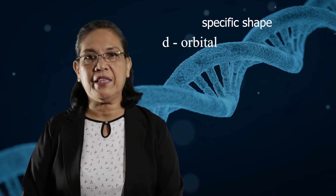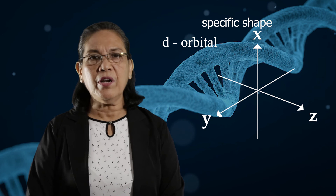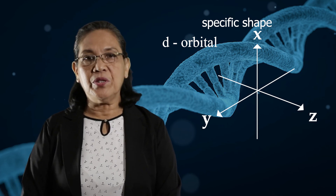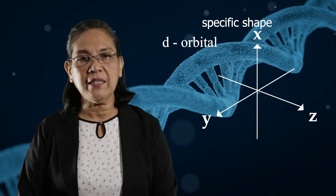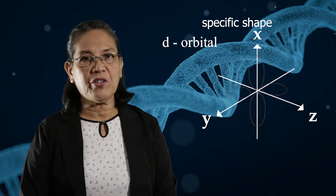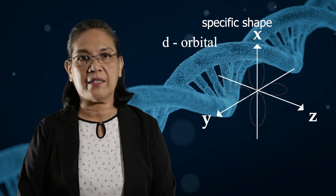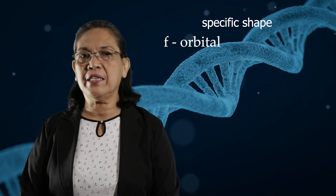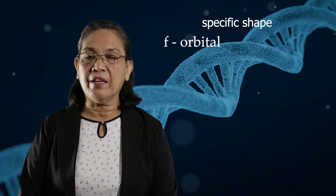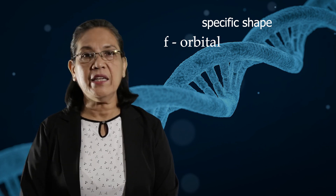For the d orbital, the shape is described as a 4-lobed electron cloud, with 2 major lobes and 2 minor lobes. The 2 major lobes may be located along the x-axis and 2 minor lobes along the y-axis, or 2 major lobes along the y-axis and 2 minor lobes along the z-axis. For the f orbital, the shape is complex — there are those having 6 lobes (3 major and 3 minor) and those having 8 lobes (4 major and 4 minor).